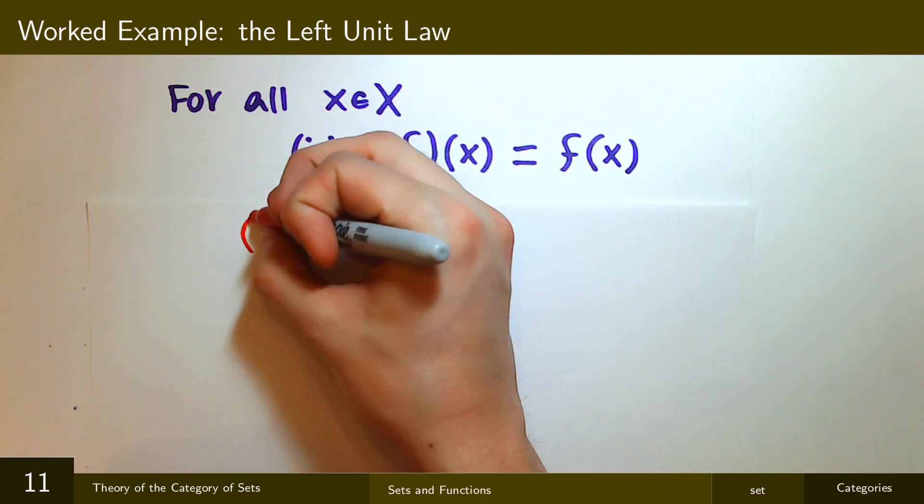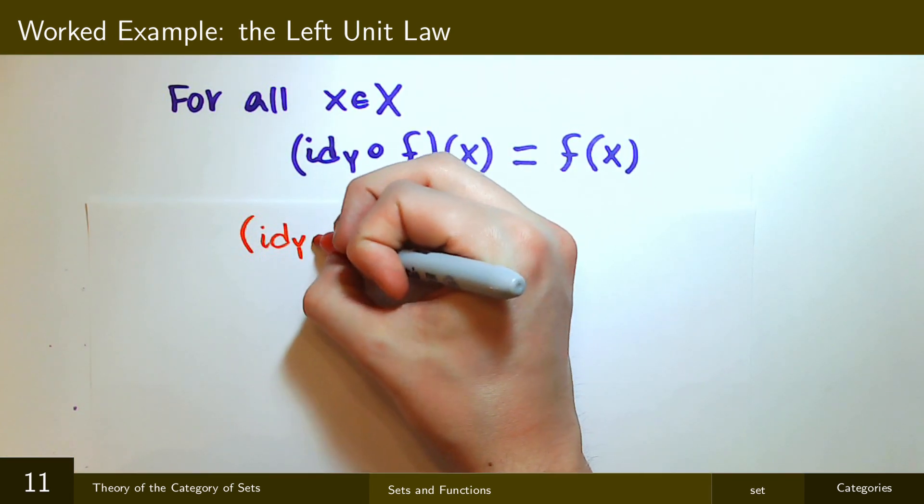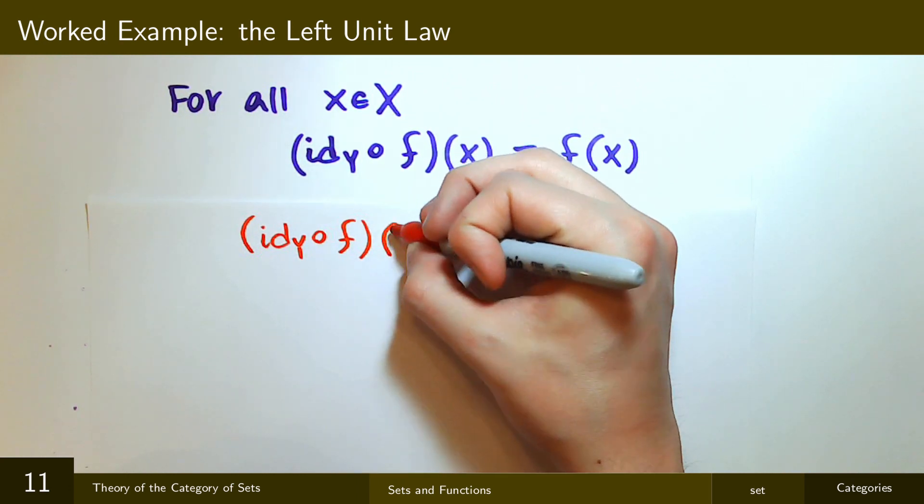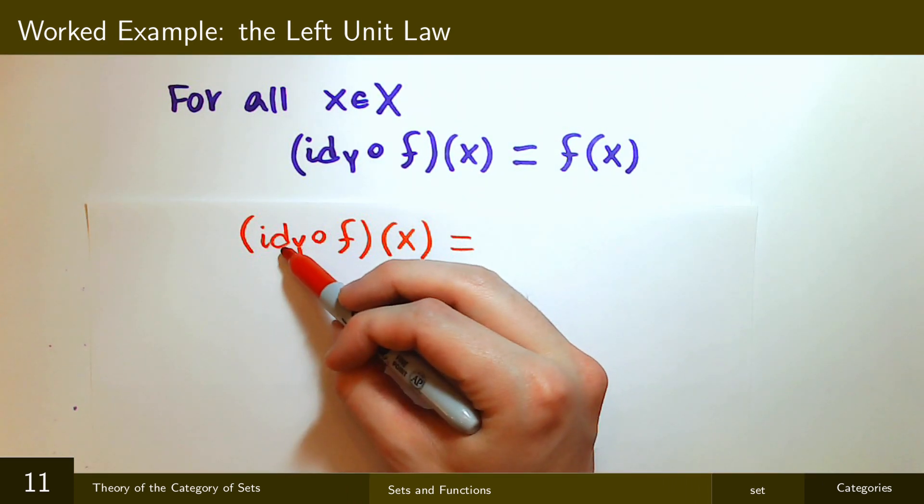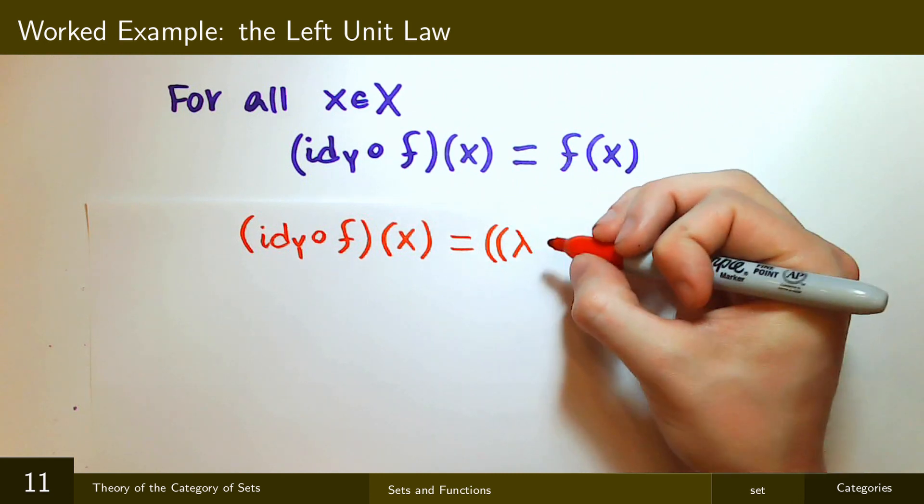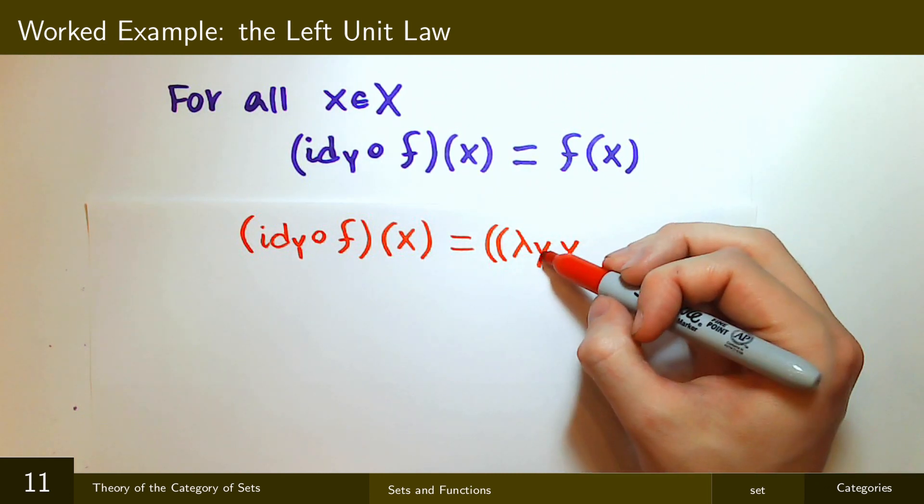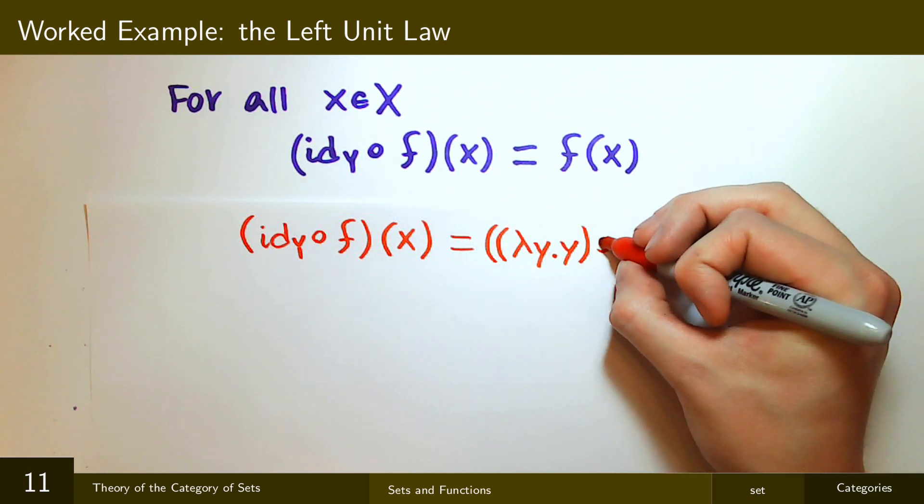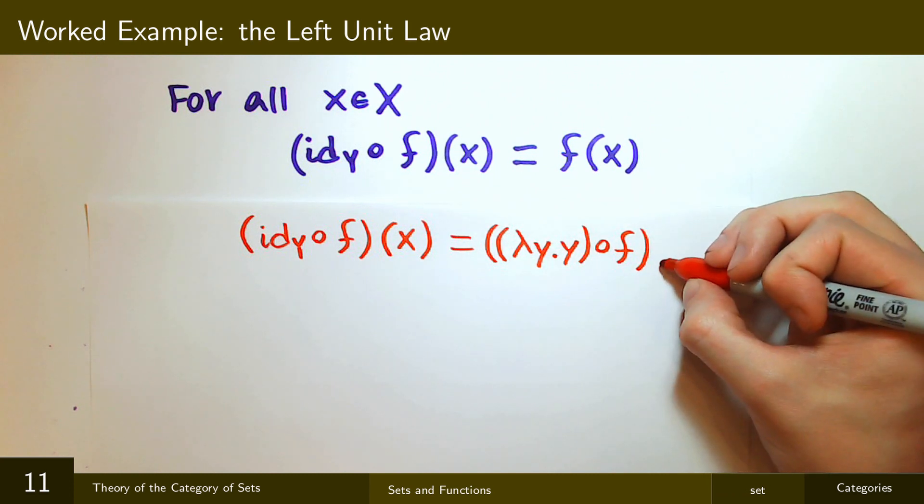So start by writing the left-hand side here, the identity Y composed with f applied to x. And so that's the same thing. So let me expand out the identity on Y. So the identity on Y is lambda y dot y. So it takes a y and returns a y. That's what the identity function is, composed with f applied to x.